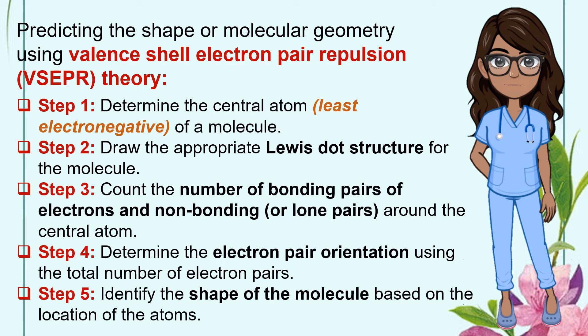You can predict the shape or molecular geometry of a substance using the following steps. Step 1: Determine the central atom of a molecule. The central atom is the least electronegative element. Step 2: Draw the appropriate Lewis-Dot structure for the molecule. Step 3: Count the number of bonding pairs of electrons and non-bonding or lone pairs around the central atom. Step 4: Determine the electron pair orientation using the total number of electron pairs. And Step 5: Identify the shape of the molecule based on the location of the atoms. For detailed application of these steps, let's watch this.